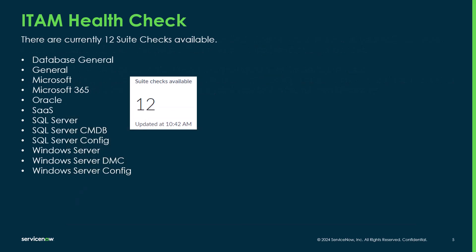The Health Check runs a series of checks in your instance, and there are currently 12 suites available — a general database check, Microsoft 365 suites, and a bunch of SQL Server and Windows Server suites built into the product today. There will be more suite checks coming in the future, so you'll want to stay up to date on the plugins so that as future checks are released, they automatically get included in your Health Check application.